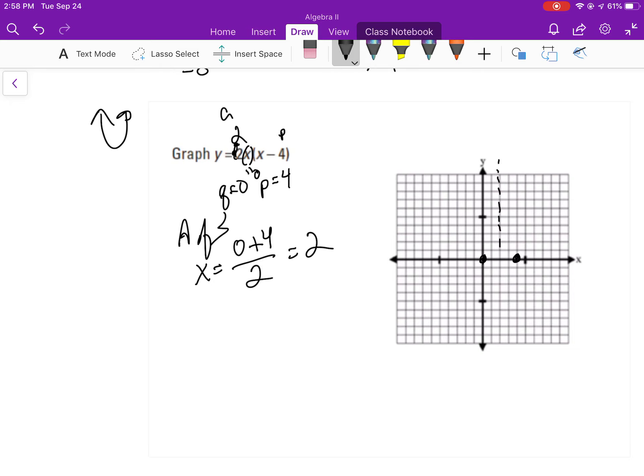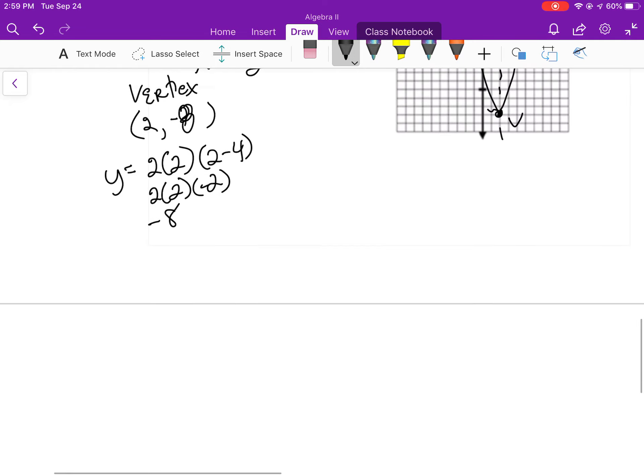Or you could count the blocks in the graph. So my vertex is 2 comma something, so I'll put 2 in for x and what do you know, it ends up to be the same thing, negative 8. That's purely coincidence. So at 2, negative 8, there is my vertex and there is my graph. These can open down.